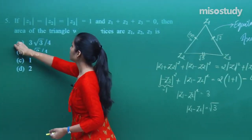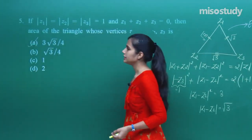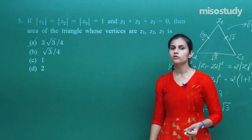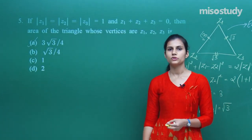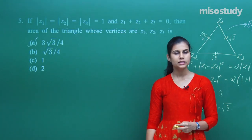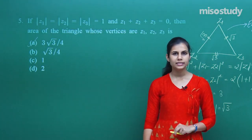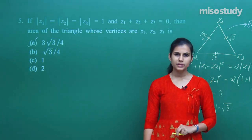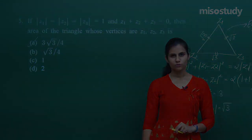3 root 3 over 4 comes out to be the area, and that is how you deal with questions in complex numbers. Practice them nicely. That is it from my side. Thank you.